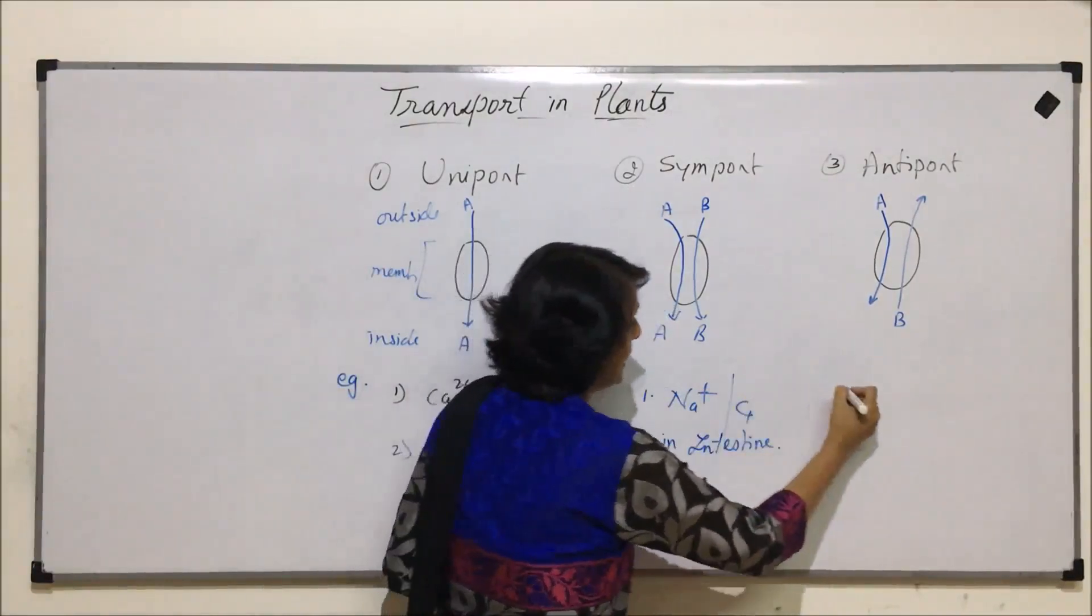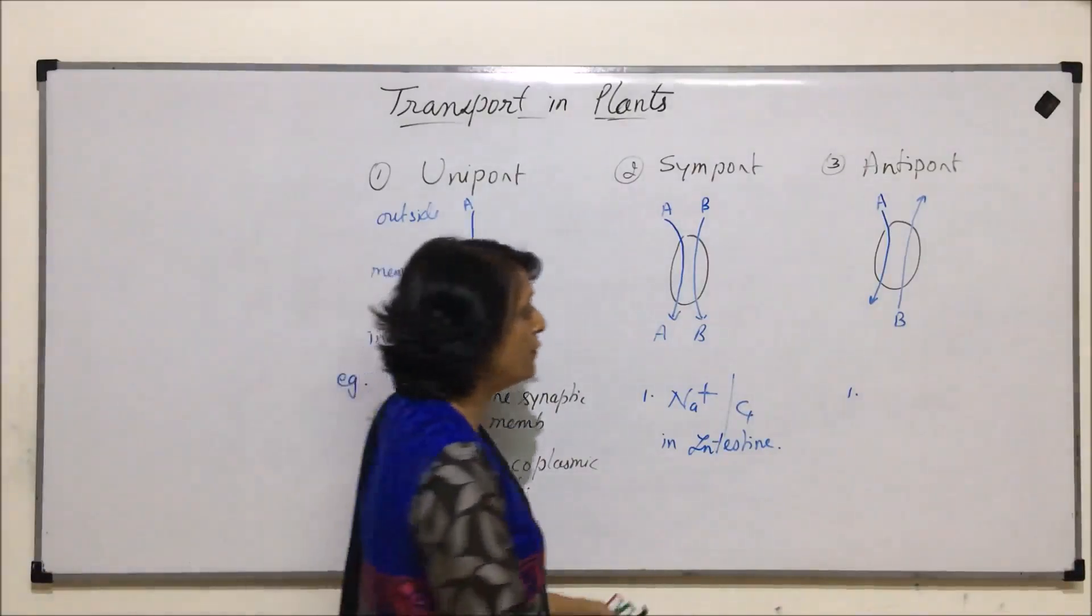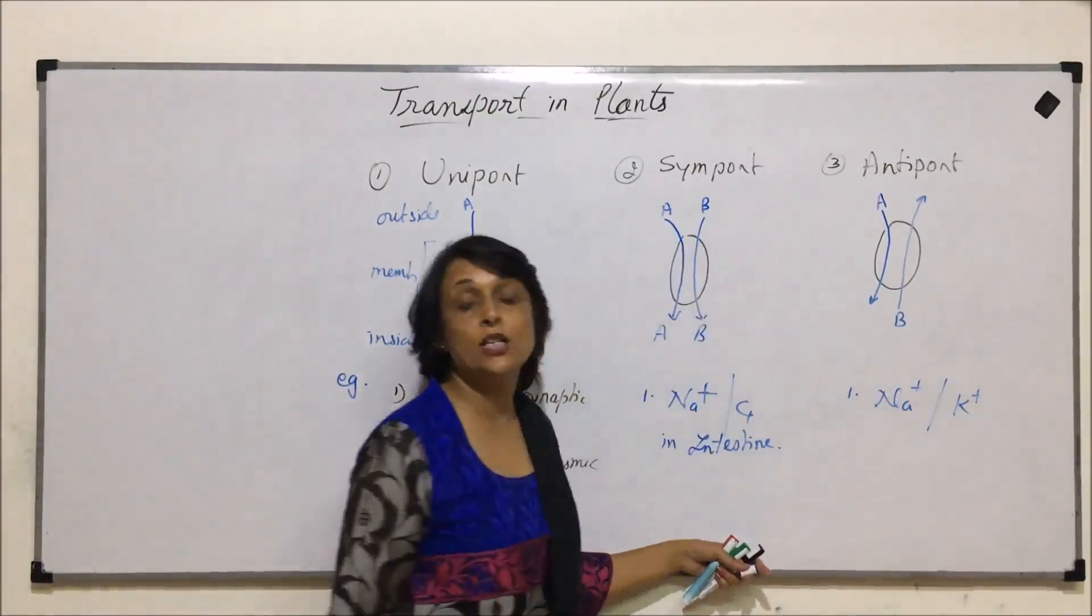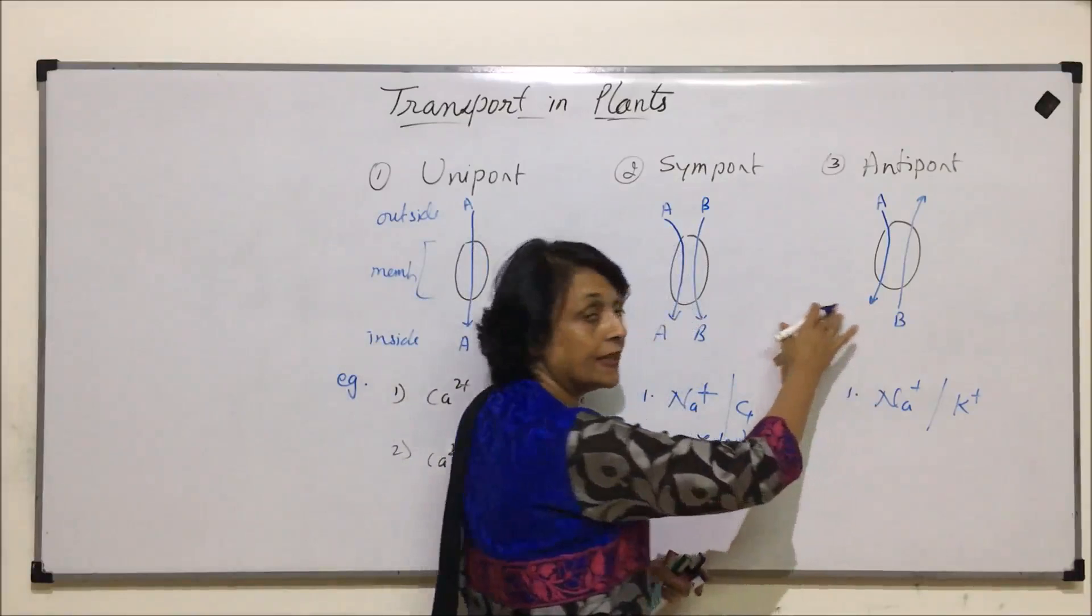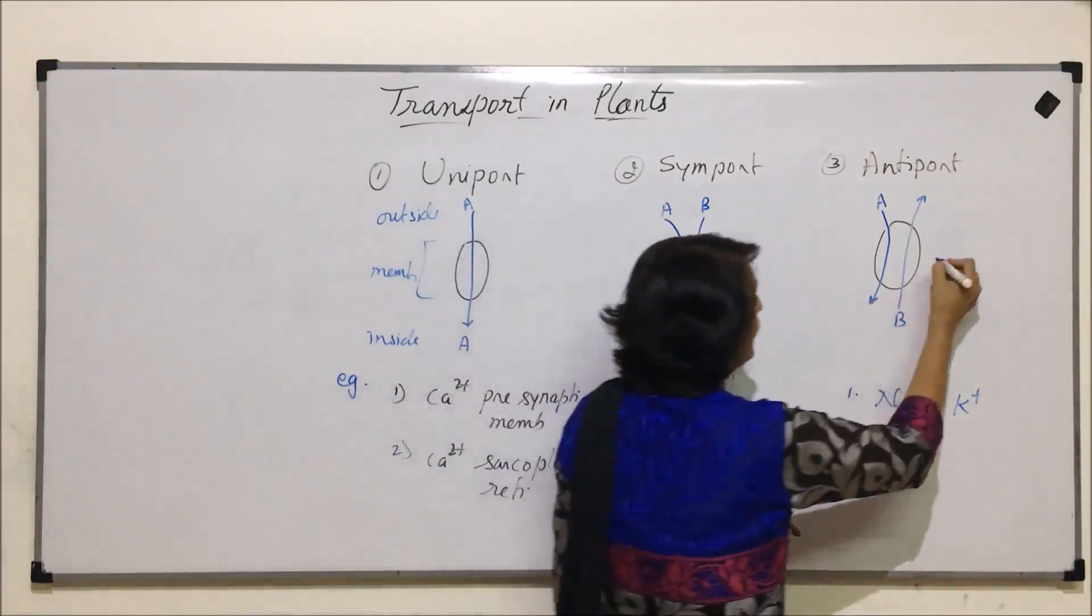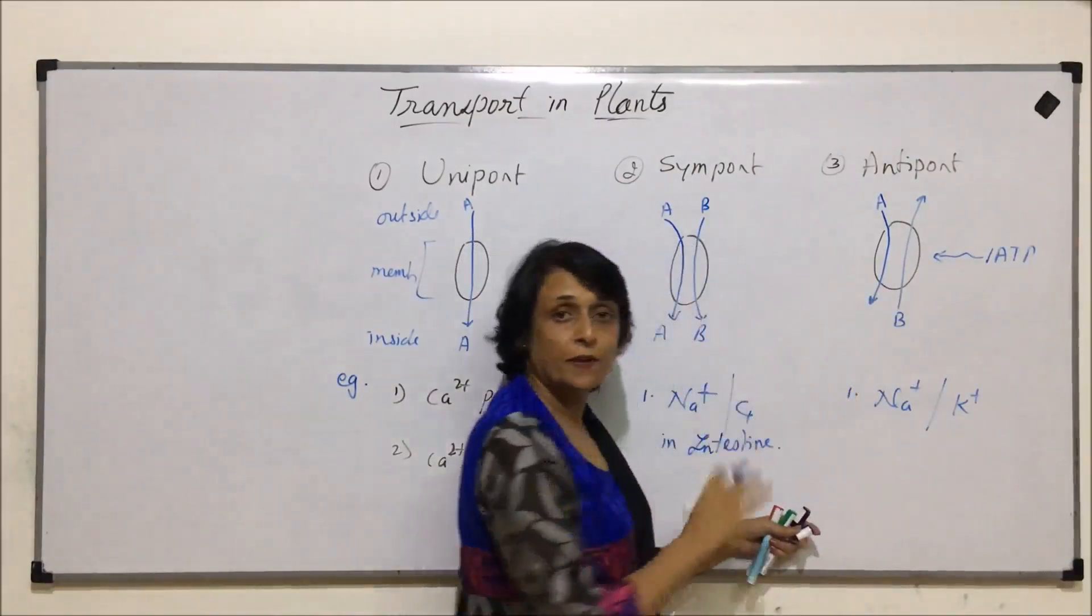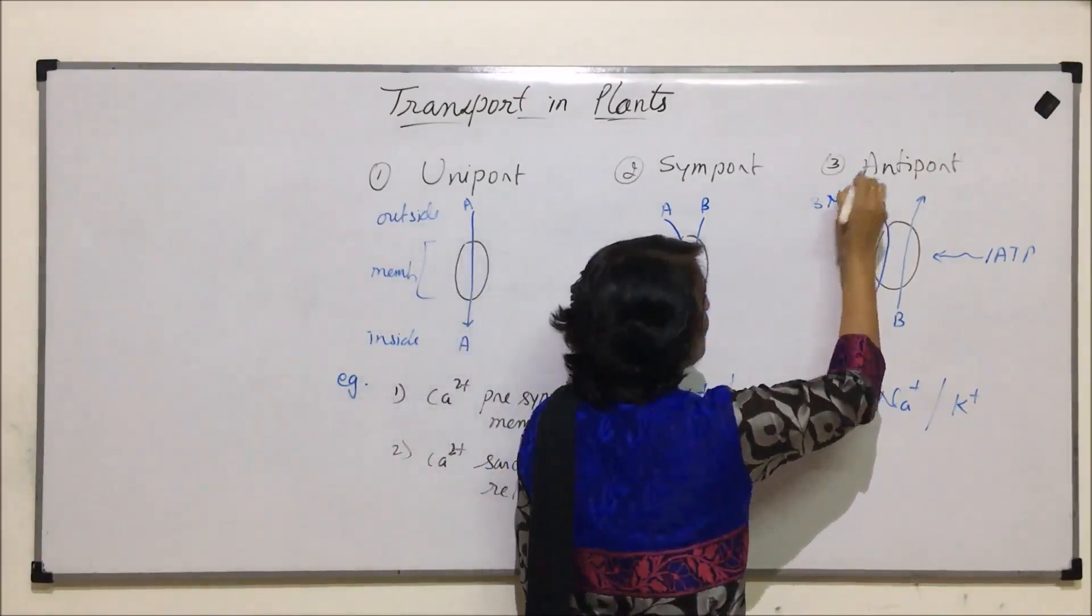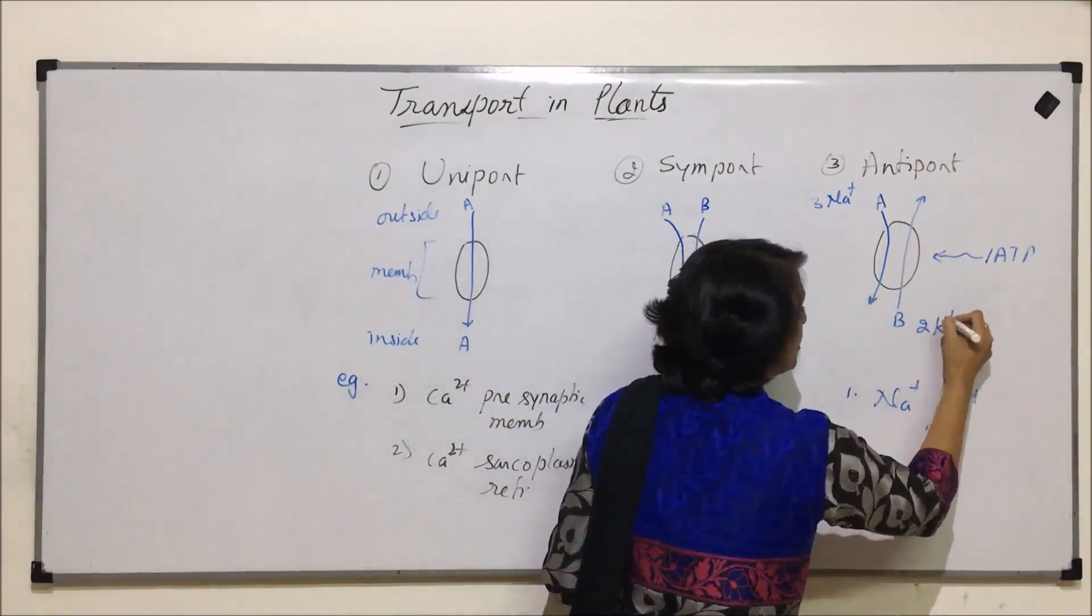The example which we can take in antiport is of sodium-potassium pumps. And we know with expenditure of one ATP, if we replace this with sodium and potassium ions, we can say with expenditure of one ATP, the amount of energy which is released, three sodium ions are pumped out of the cell in exchange of two potassium ions.